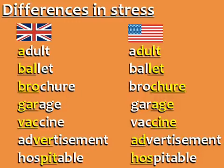British and American English have some differences in the stress of certain words. Listen to the pronunciation — first the British English and then the American English. Examples: adult, ballet, brochure.